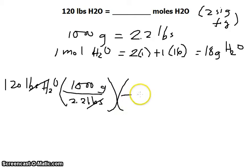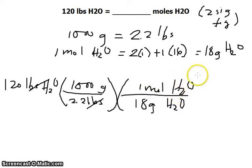And then from grams, we need to find the moles. We have here 18 grams of H2O is equivalent to 1 mole of H2O. So the grams would have to cancel, so we have our answer now in moles.